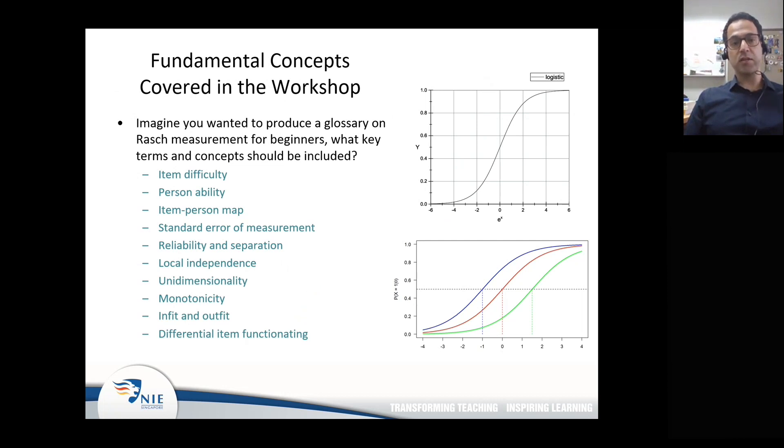One last slide in this brief presentation before we start the workshop. There are some fundamental concepts that I will cover in this workshop, including item difficulty, person ability, item-person map, standard errors, and so on. I'm not sure we will find time to discuss differential item functioning, but it's always important to look into that when you're validating an instrument. This is the Rasch way. What I just presented in the previous three or four slides was the IRT way. So we're doing the Rasch way today. That brings me to the end of the brief introduction.